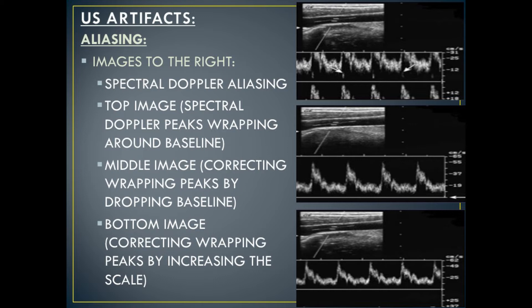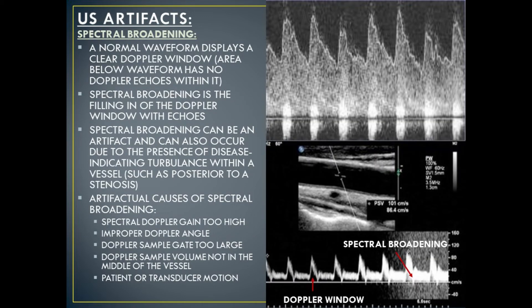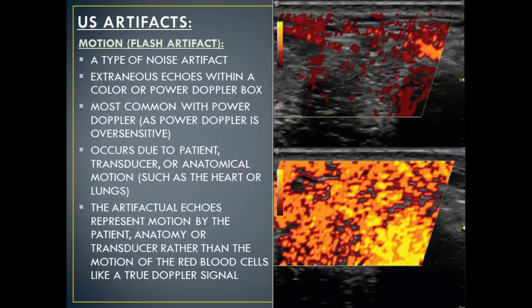Dropping the baseline and increasing the scale or the PRF are two techniques to eliminate artifactual spectral Doppler aliasing. The next type of ultrasound Doppler artifact is known as spectral broadening. On ultrasound, a normal spectral Doppler waveform displays a clear Doppler window — the area below the waveform that has no Doppler echoes within it. Spectral broadening is the filling in of the Doppler window with echoes. Spectral broadening can be an artifact, and can also occur due to the presence of disease, indicating turbulence within a vessel such as posterior to a stenosis. Artifactual causes of spectral broadening include the spectral Doppler gain being too high, improper Doppler angle, the Doppler sample gate being too large, the Doppler sample volume not in the middle of the vessel, or due to patient or transducer motion.